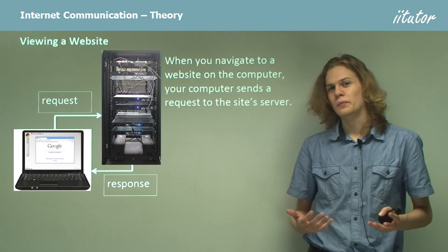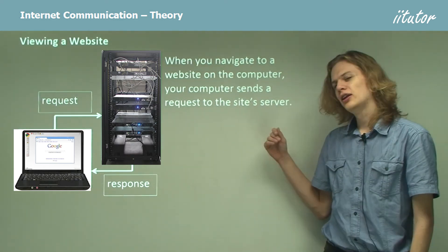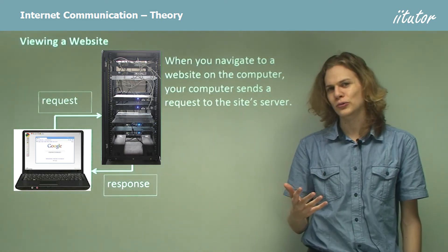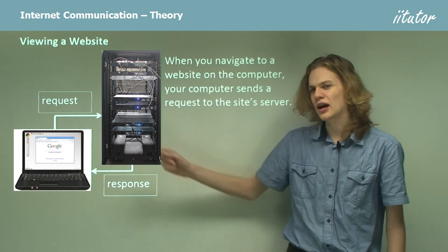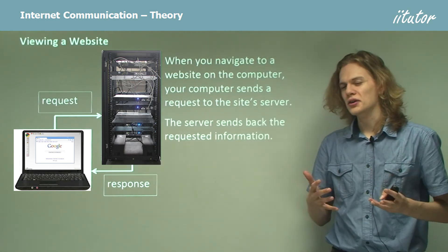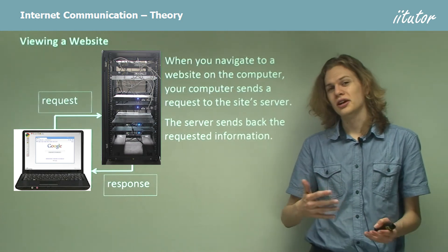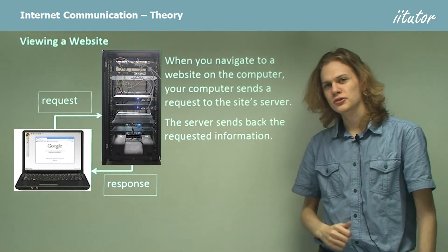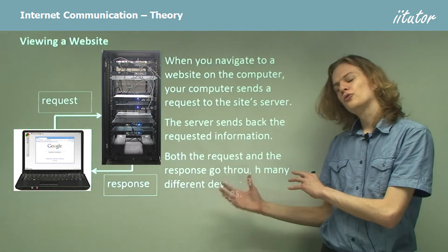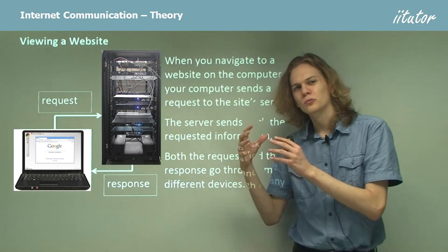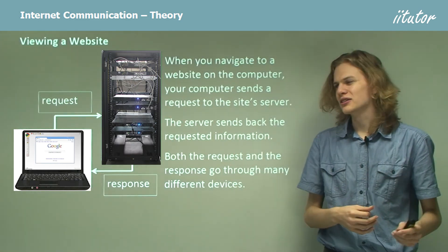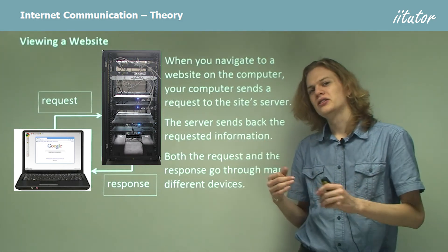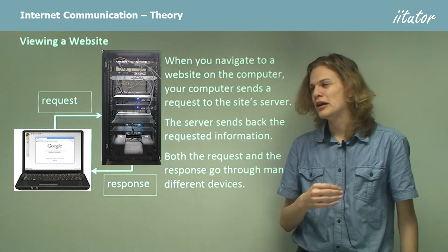If you go to your computer and type in a web page like Google, your computer will send a signal to the computer that has Google on it, which might be thousands of kilometers away on the other side of the world. That's given here by the request arrow coming out of the laptop. The server will receive the request, process it using a protocol — perhaps the hypertext transfer protocol — and based on what the request has in it, it will take the web pages it contains and send a response. Both the request and the response will go through many different devices. It's not just a simple connection plugging one computer to the Google computer; otherwise that's a local area network, not the internet.